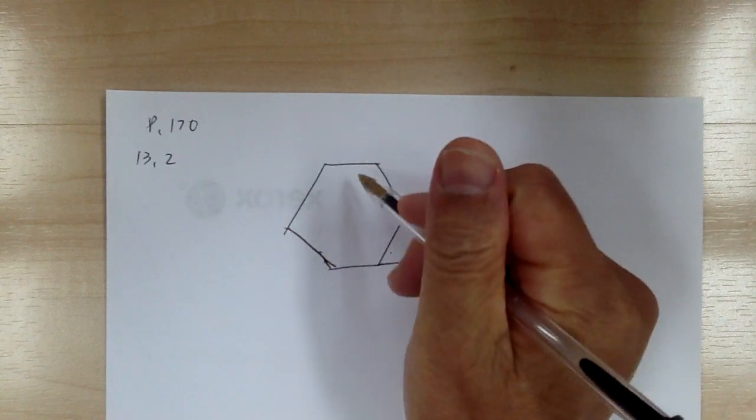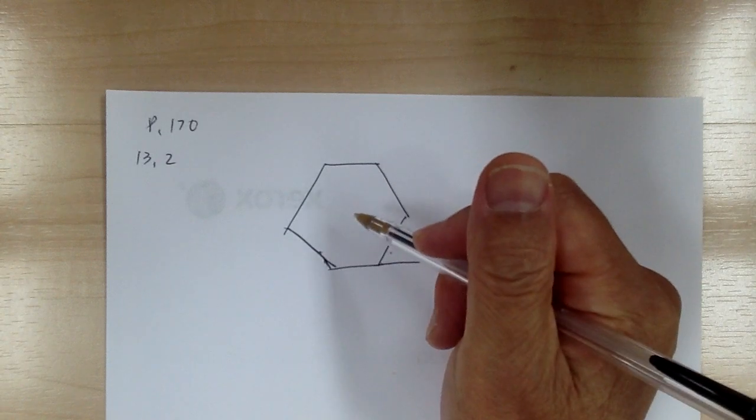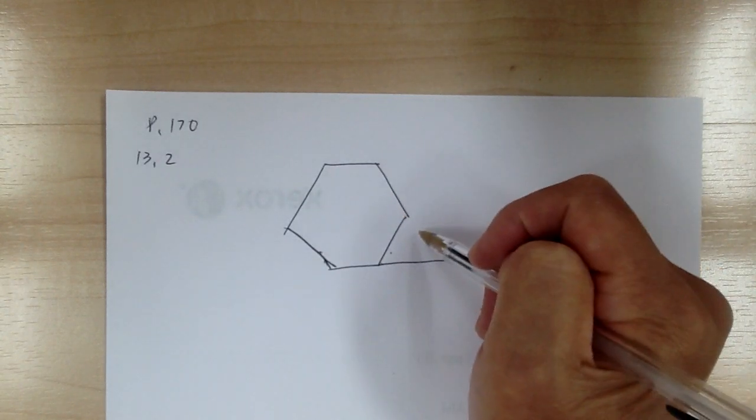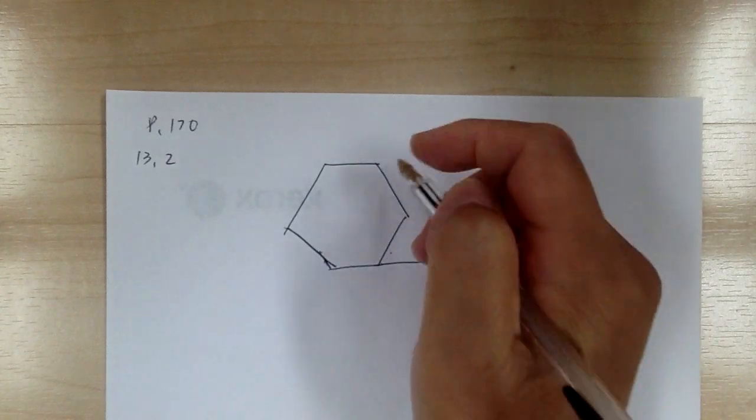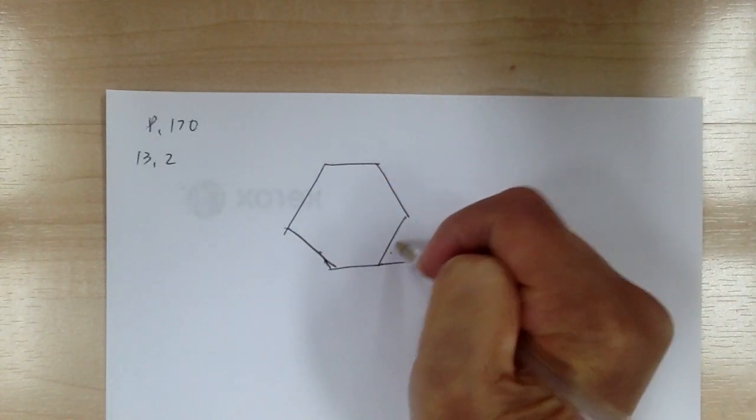But it's easier if we look at a regular polygon. So let's say you have a regular polygon, and you use this one for example. Notice there are six of them.